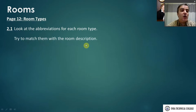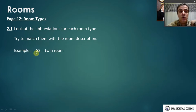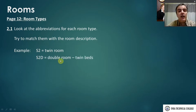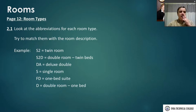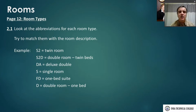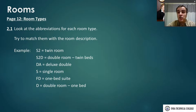In a hotel, we use abbreviations for rooms. For example: S2 would be a twin room with two single beds; S2D is a double room with twin beds; DA is a deluxe double; S is a single room; FD is a one-bed suite; D is a double room with one bed. Some hotels do it a little differently, but these abbreviations make it easier when making or taking a reservation — you don't need to write full words.